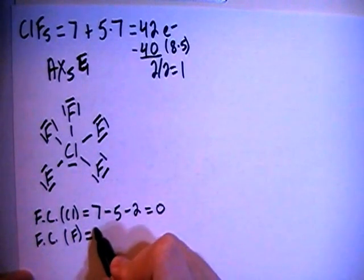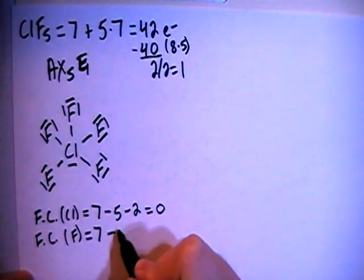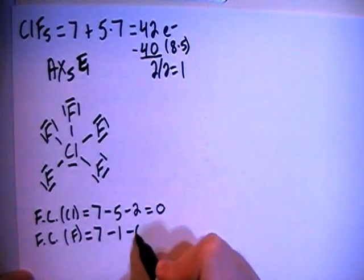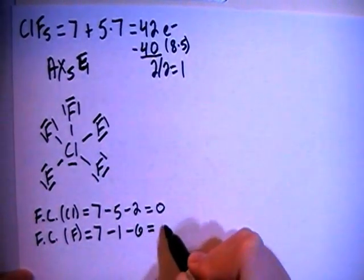So for fluorine, it's going to be the 7 valence brought in minus the single bond, 1 bond, minus 2, 4, 6 non-bonding electrons, which equals 0.